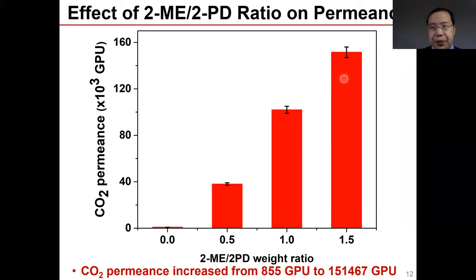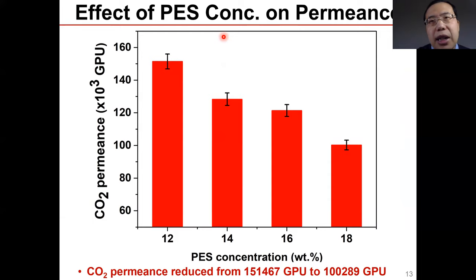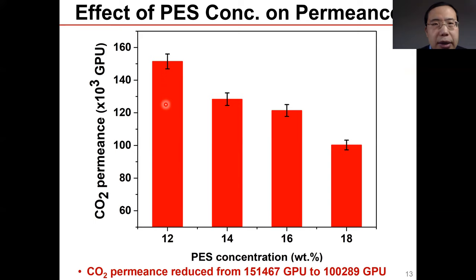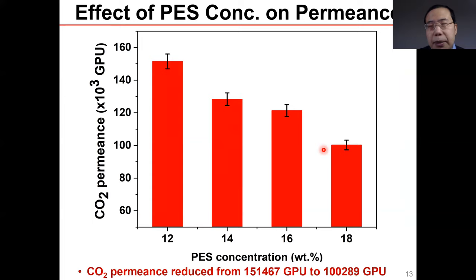Here we show the effects of PES concentration on CO2 permeance. With 12%, the surface morphology is much more open, so CO2 permeance is high. As concentration increases, CO2 permeance decreases because the structure becomes tighter. But we still maintain more than 100,000 GPU, which is still very good.